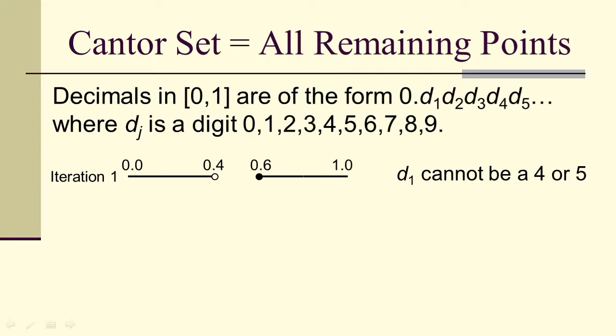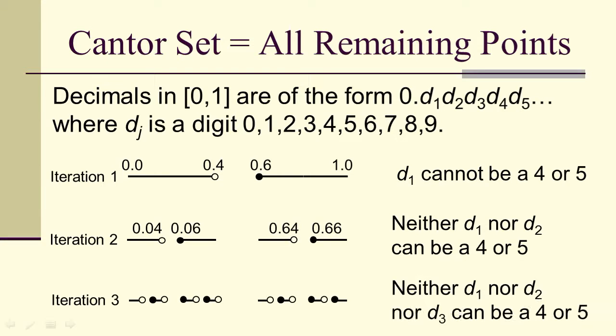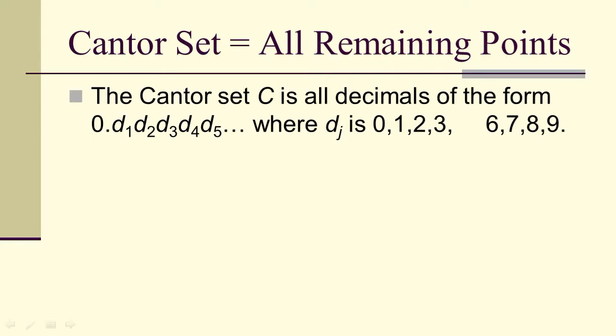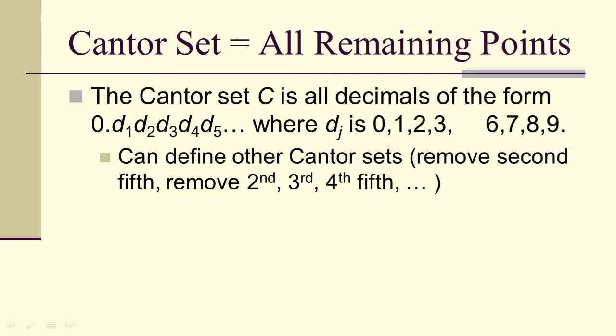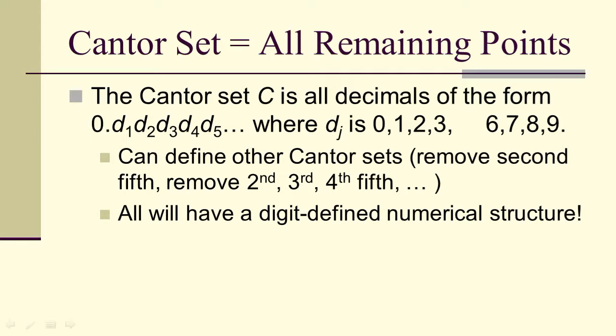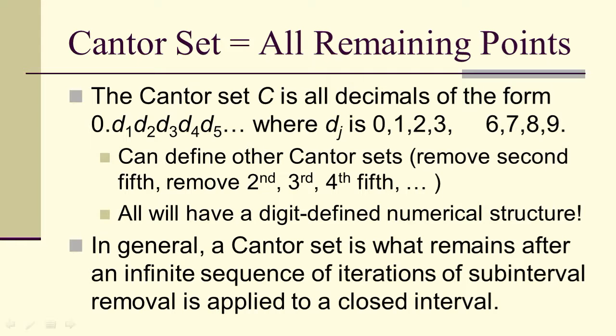Except, the d1 can't be a 4 or 5. The d2 can't be a 4 or a 5. The d3 can't be a 4 or a 5. So this Cantor set is all the decimals in which there are no 4s or 5s. The digits are 0, 1, 2, 3, and 6, 7, 8, 9. That means that we have this infinite set, this infinite collection of points that are in the Cantor set. But none of the points in the Cantor set have a 4 or a 5 in their decimal expansions. We can do the same thing. We can remove 2nd 5ths, we can remove 2nd, 3rd, 4th 5ths, we can remove middle thirds, we can remove last tenths, and so on. All these will have a well-defined numerical structure.